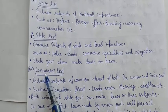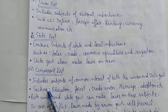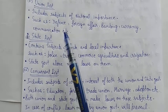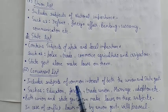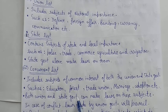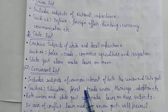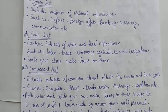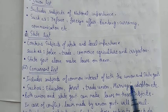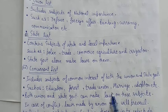Teen list banayi gayi: teesri list hai Concurrent List — ismein include subjects of common interest of both the Union and State governments. Jaise education, forest, trade union, marriage, adoption, etc. Education mein sare desh mein ek jaisi education system hogi, toh tabhi better hoga. Forest bhi sare desh mein ek jaisi minor environment ke liye. Marriage aur adoption ke rules pure desh ke common interest ke hain.